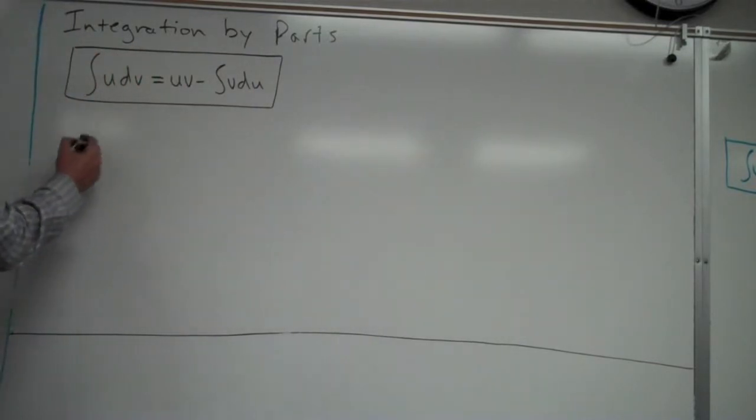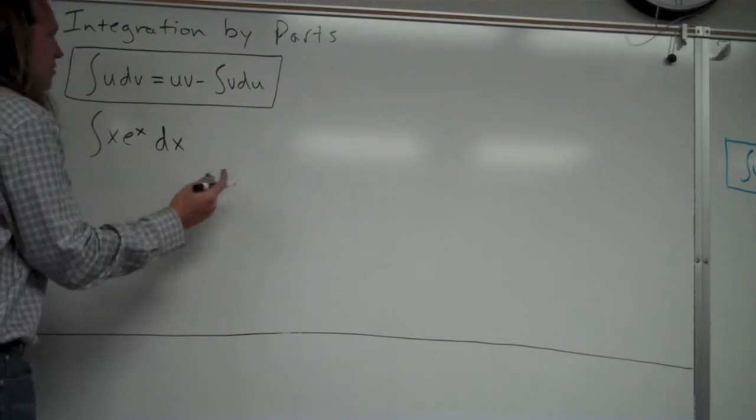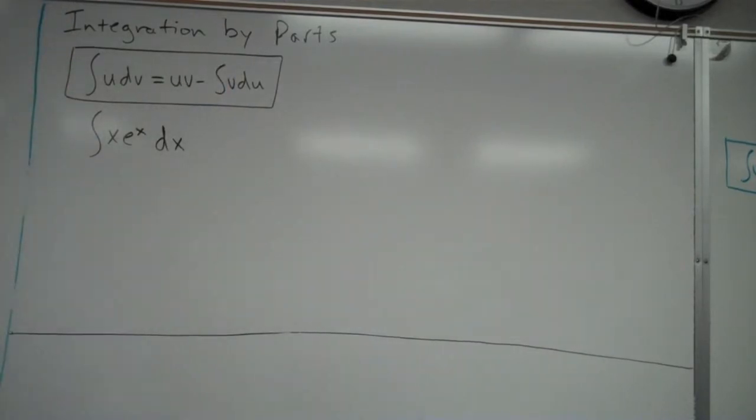And how this applies is to an integral such as x e to the x. So this is a technique of integration, integration by parts. It allows you to find the antiderivative of certain problems that without it you couldn't. For instance, the integral of x e to the x. Without integration by parts, this cannot be done.